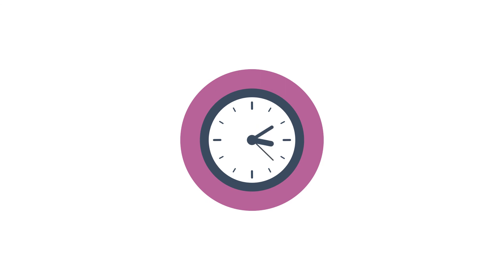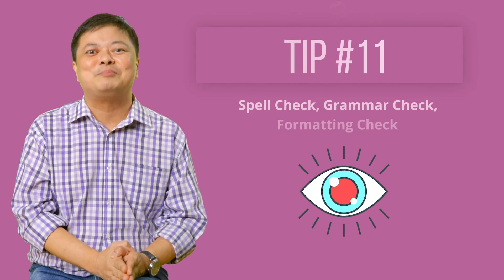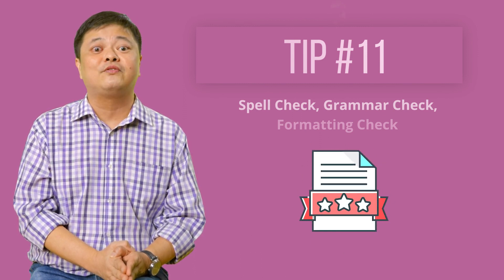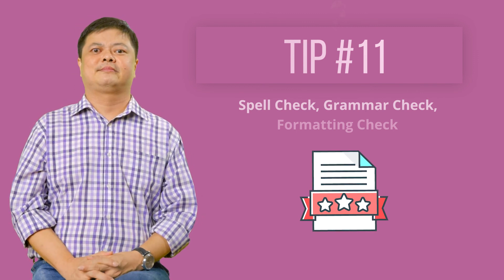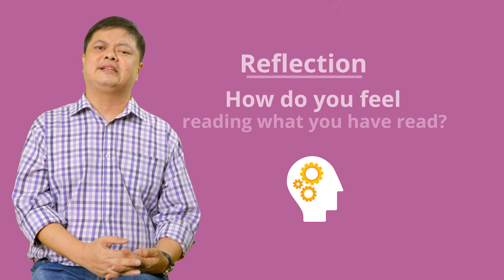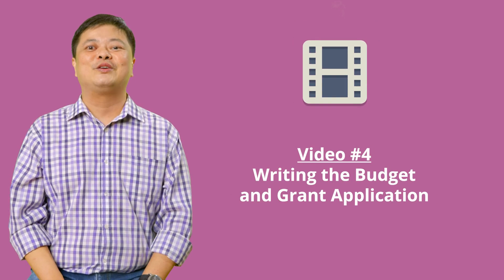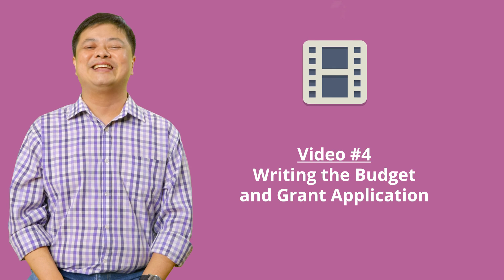Sometimes you may need to draft the LOS yourself, and the back-and-forth finalising it takes time. Please spell check, grammar check, and formatting check. Ensure consistent font sizes and page numbers. How do you feel reading what you have read? Now that you have prepared your CVs, biographies and references or letter of support, you are ready to move on to the next stage of writing the budget and the grant. See you at the next video, where you'll learn about writing the budget and grant application.